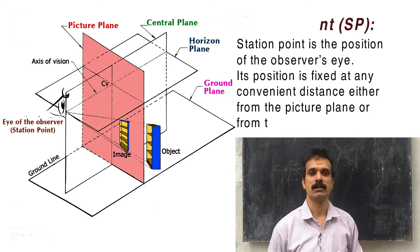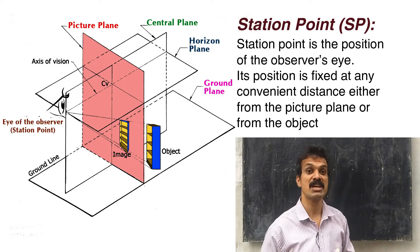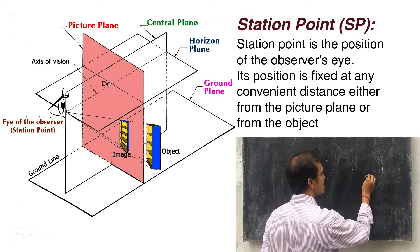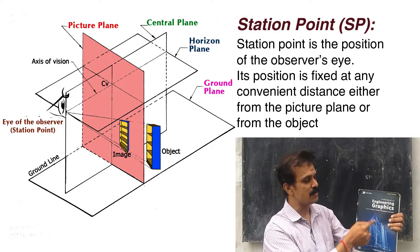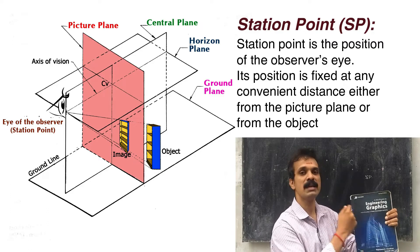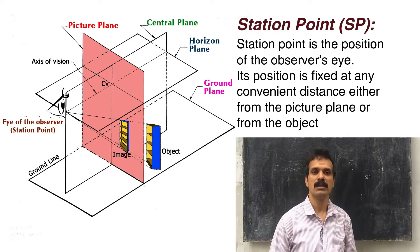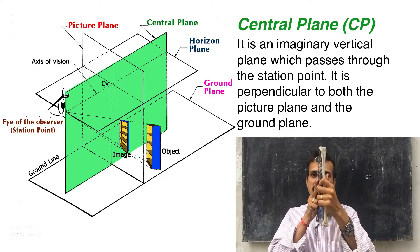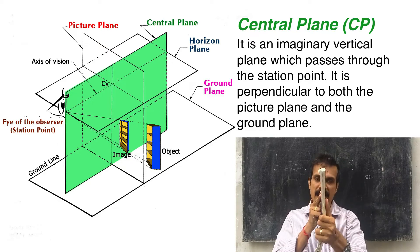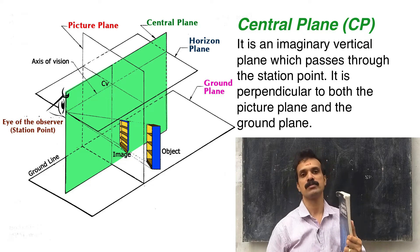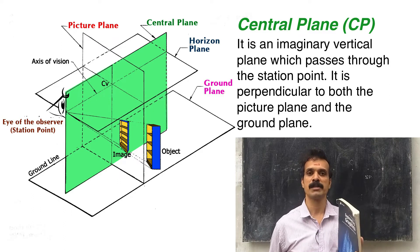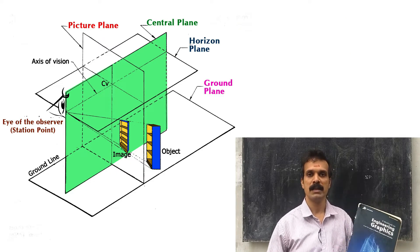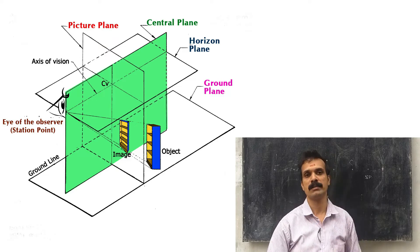The eye of the observer is called the station point, abbreviated SP. The visual rays coming from the eye of the observer pierce at points on the picture plane, and those points can be connected to obtain our image. There is also a plane that is perpendicular to both the ground plane and the picture plane, and passes through the eye of the observer. This plane is known as the central plane.